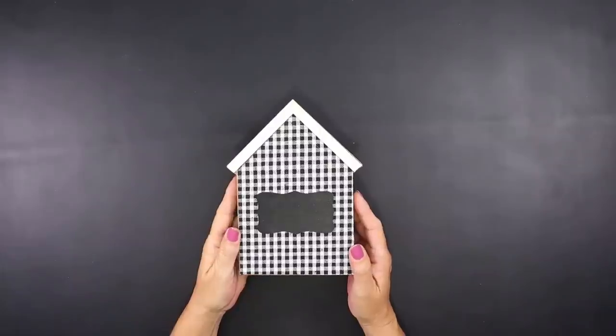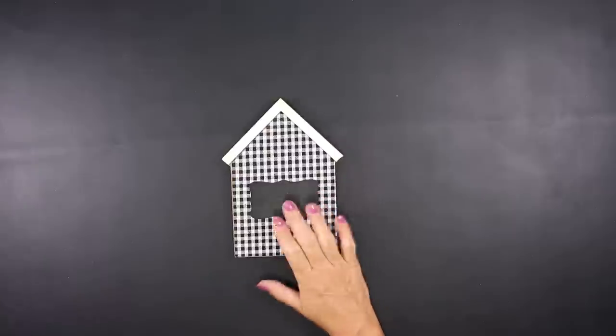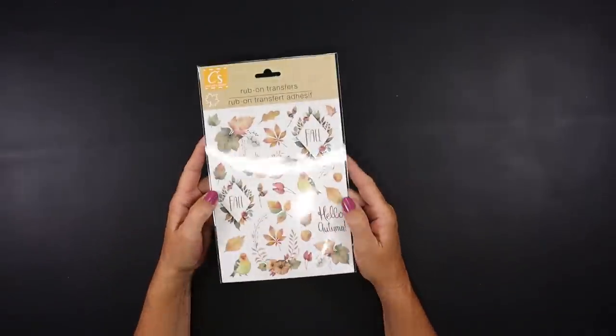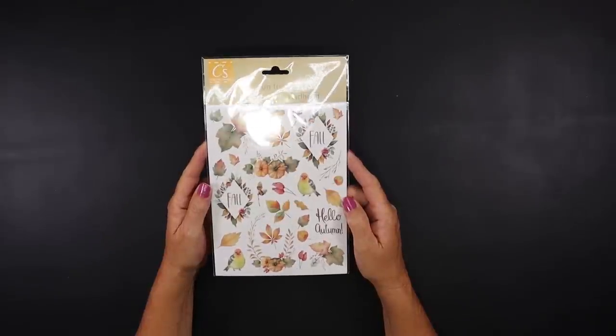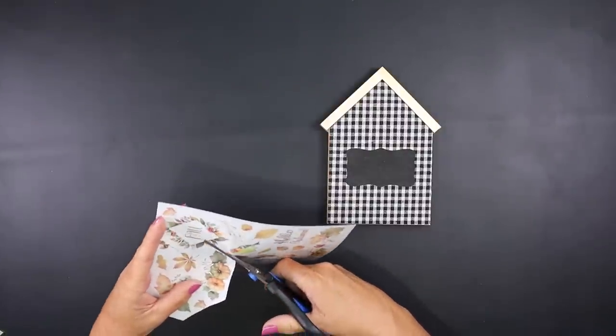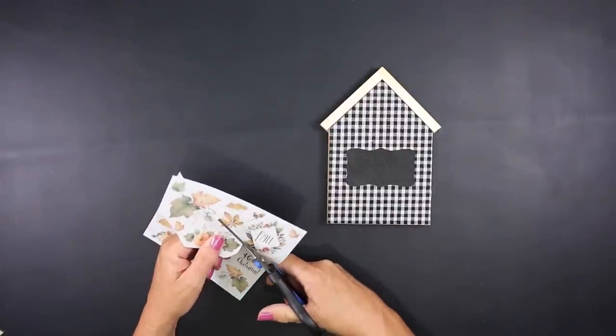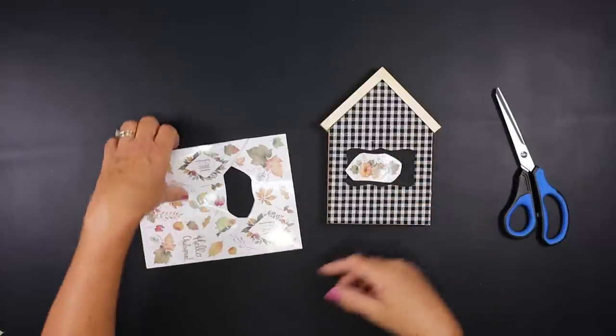For this project, we're going to give this beautiful Dollar Tree sign a nice fall feel, using some of Dollar Tree's rub on transfers. They have a couple of different kinds. I'm going to cut out the pumpkin and leaf bundle, as well as one of the birds. I wasn't sure exactly where I wanted to place the bird, but I knew I wanted to put that on this project.